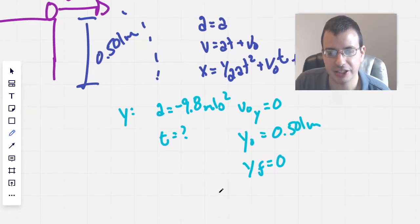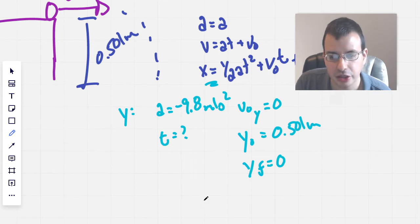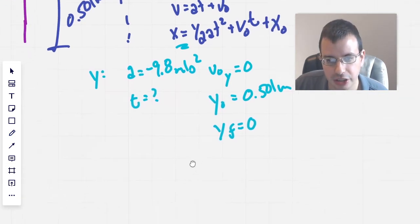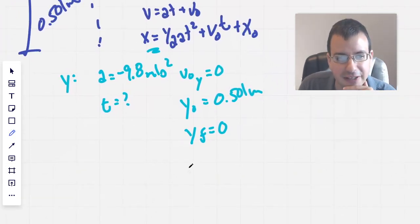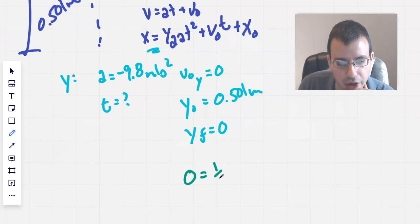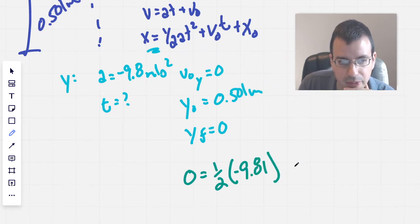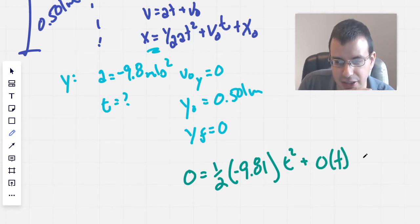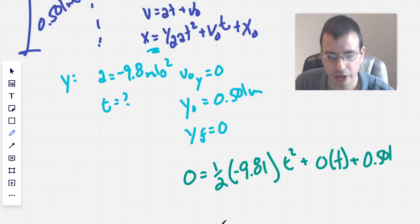Okay, so now we're going to plug this into this equation right here. So, let's see here, get a little more real estate. Write this out. We have y final, which is zero equals one half times negative 9.81 meters per second squared times t squared plus v naught, which is zero times t plus an initial 0.501.